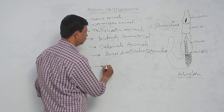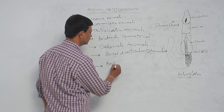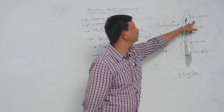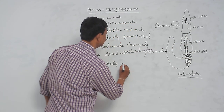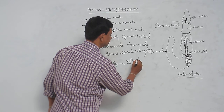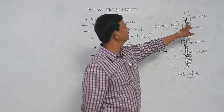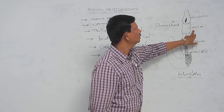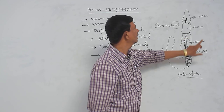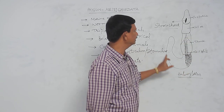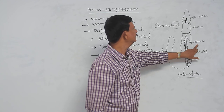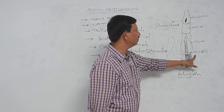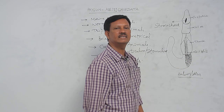The body is mainly divided into three parts: the proboscis, present at the anterior region; the collar, behind the proboscis; and the elongated trunk region. In the trunk region, respiratory organs known as gill slits are present.